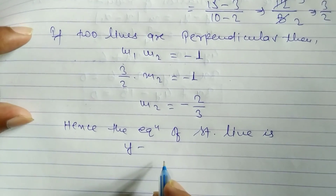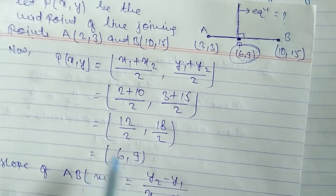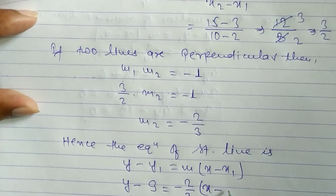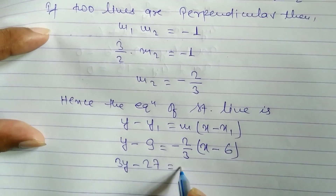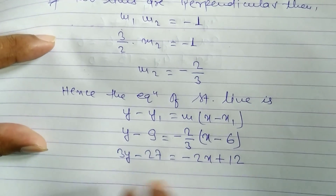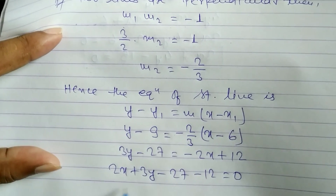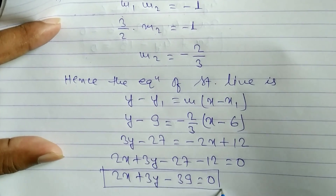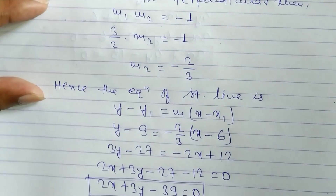Using the one-point formula: y minus y1 equals m times (x minus x1), where x1 equals 6, y1 equals 9, and m equals minus 2 by 3. Cross multiplying: 3(y minus 9) equals minus 2(x minus 6), giving 3y minus 27 equals minus 2x plus 12. Taking all terms to the left: 2x plus 3y minus 27 minus 12 equals 0, so 2x plus 3y minus 39 equals 0. This is the required equation of the perpendicular bisector.